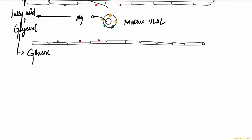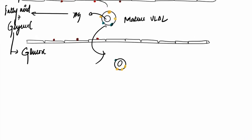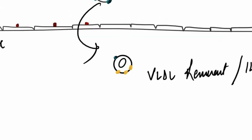This will be known as VLDL remnant or intermediate density lipoprotein or IDL. It will definitely be smaller than the mature VLDL. This is known as VLDL remnant or IDL, that is intermediate density lipoprotein.